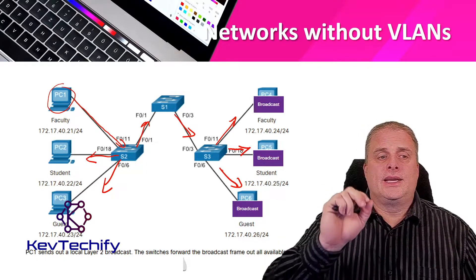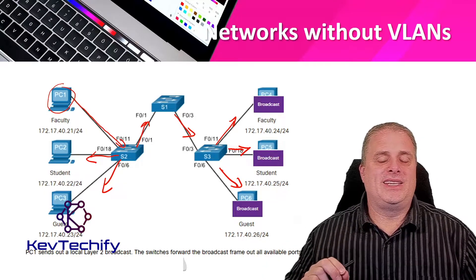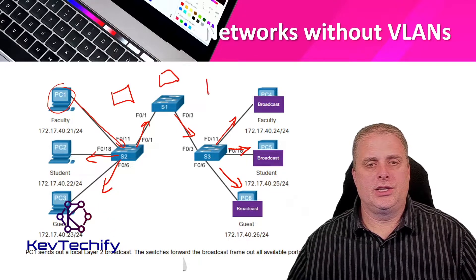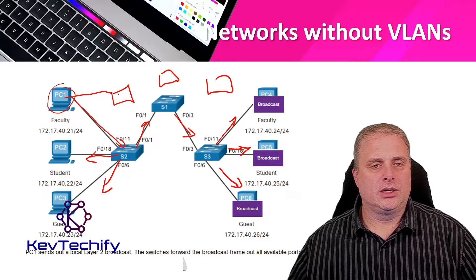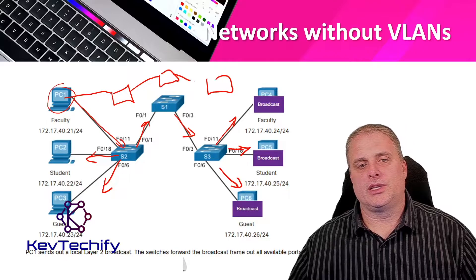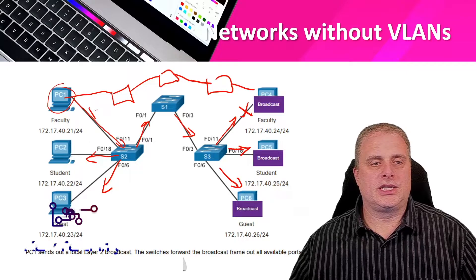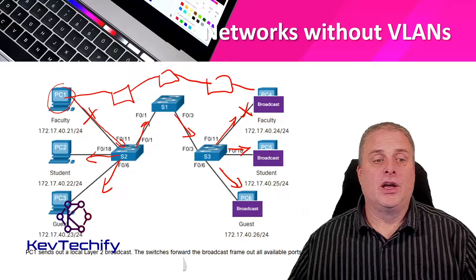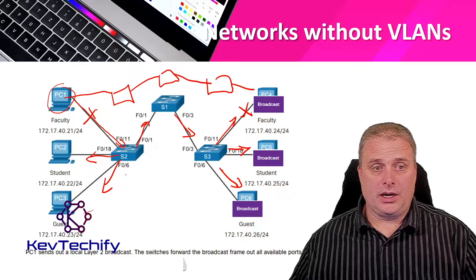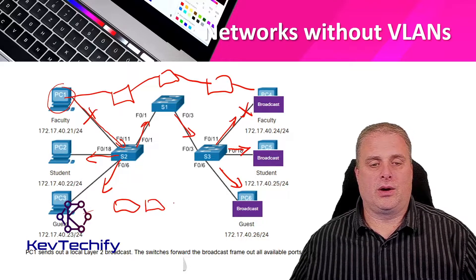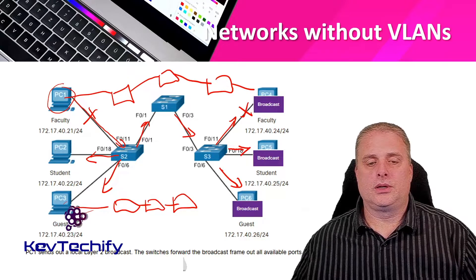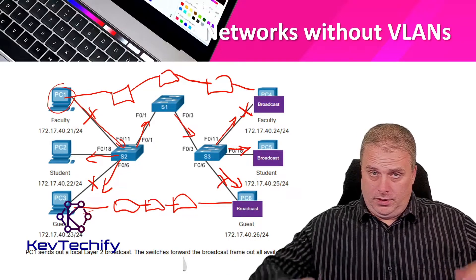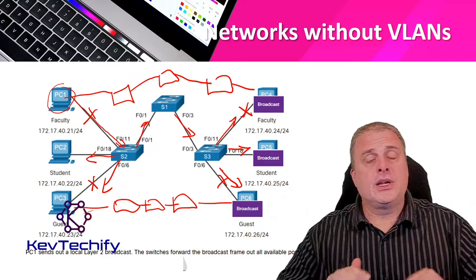If you wanted to segment off faculty computers — say PC1 and PC3 — you would need to add three more switches at each location, doubling your equipment just to separate that traffic. Want to segment off a guest network too? You'd need to add another three switches. Just think of that cost multiplying with every LAN segment you want to keep separate. You need another full set of equipment if you're not using virtual LANs.